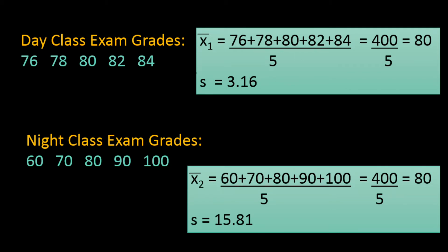Here we have an example of two data sets: grades from a class of day students and grades from a class of night students. X-bar for both classes is calculated at 80, so the mean is the same for both. On the other hand, the standard deviation is very different — s is calculated as 3.16 for the day students and 15.81 for the night students.